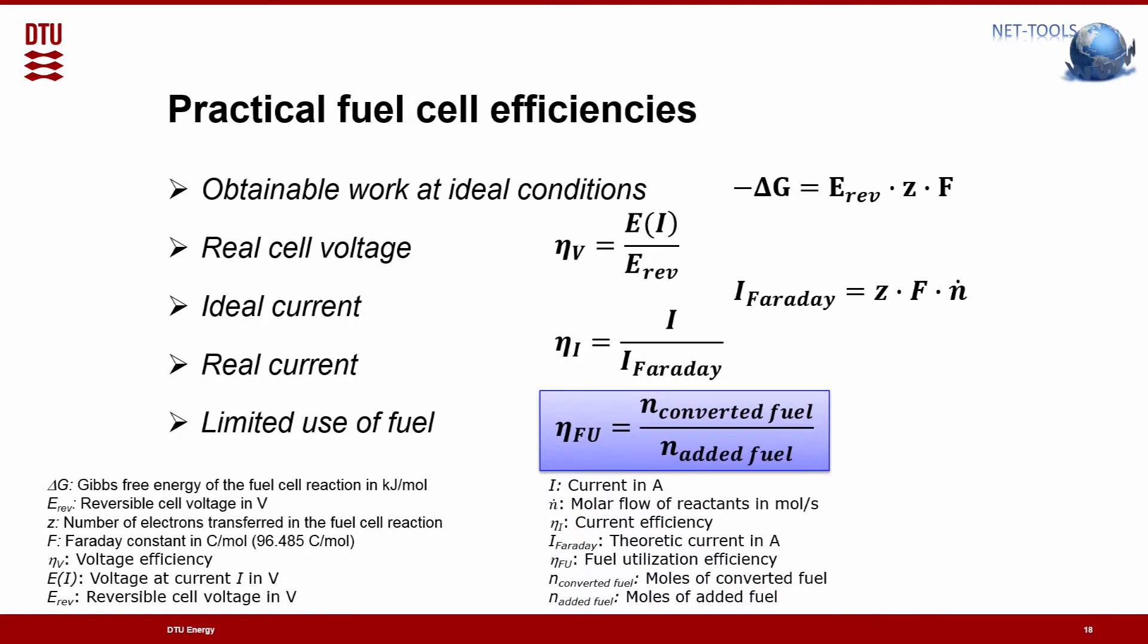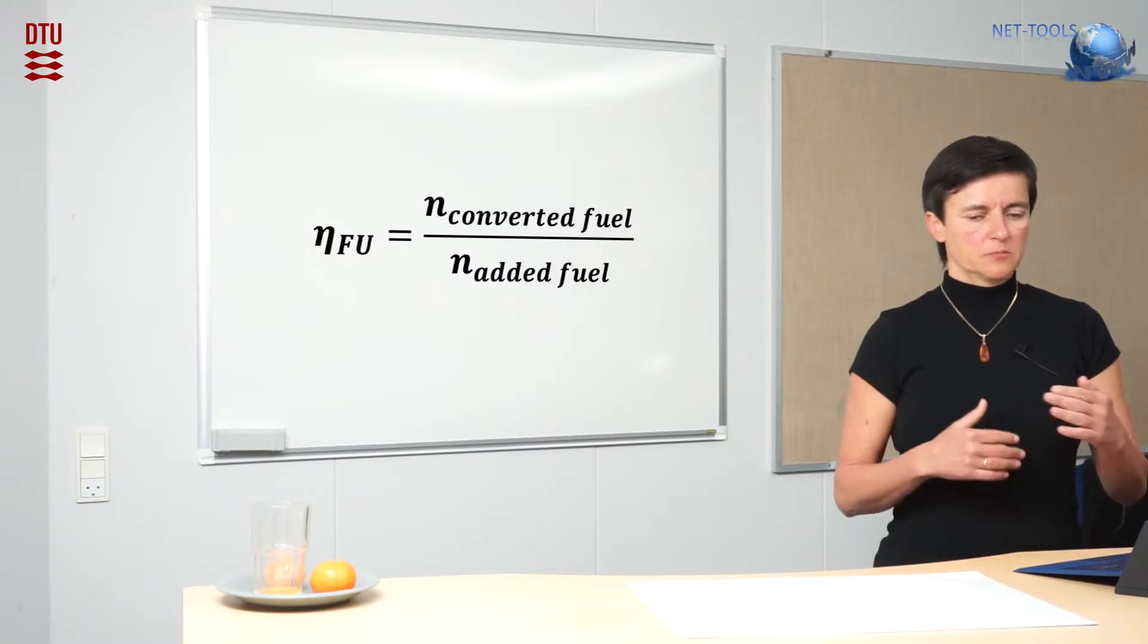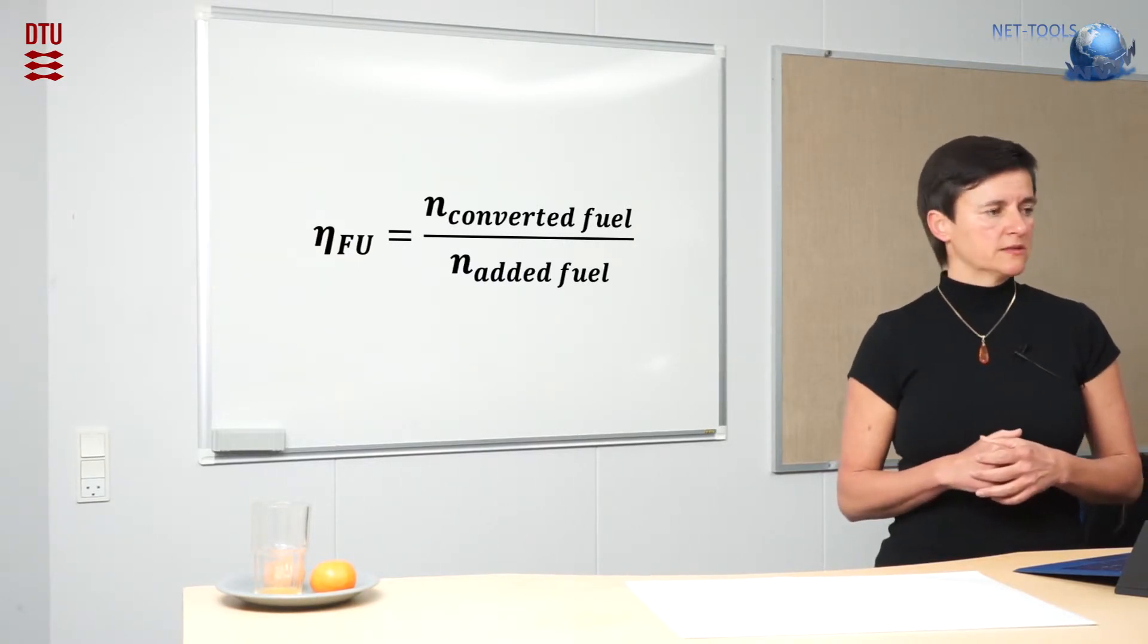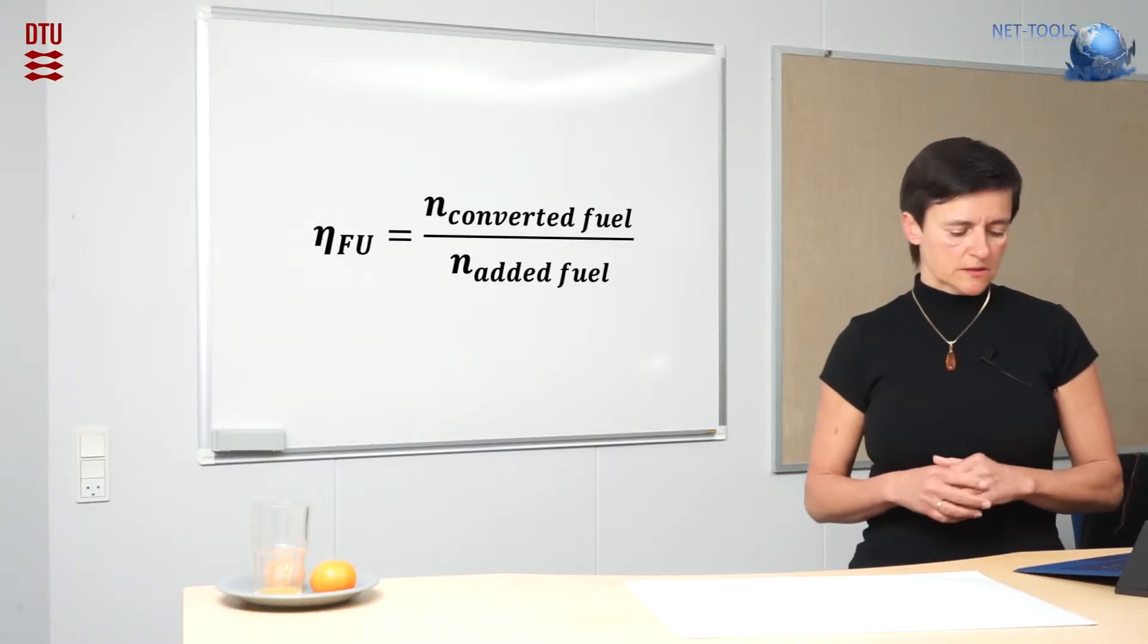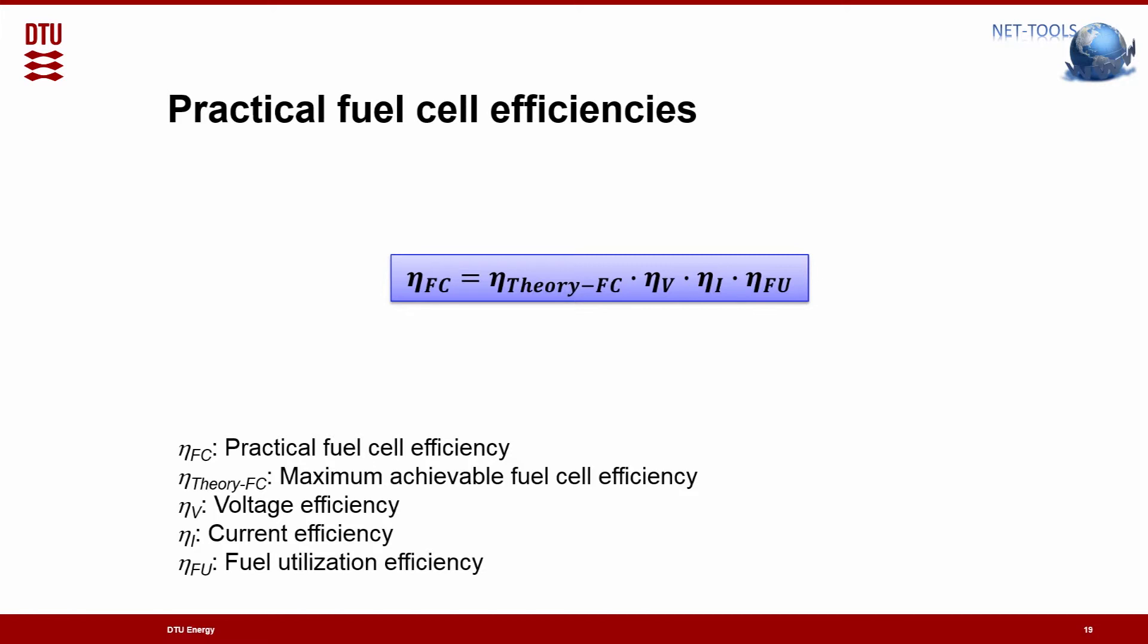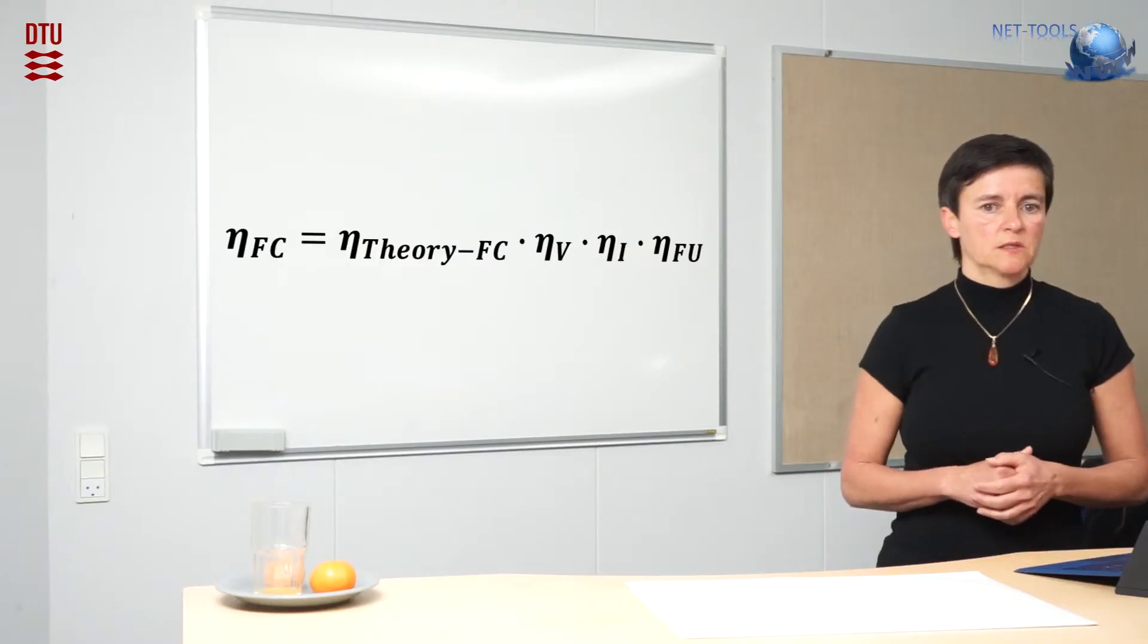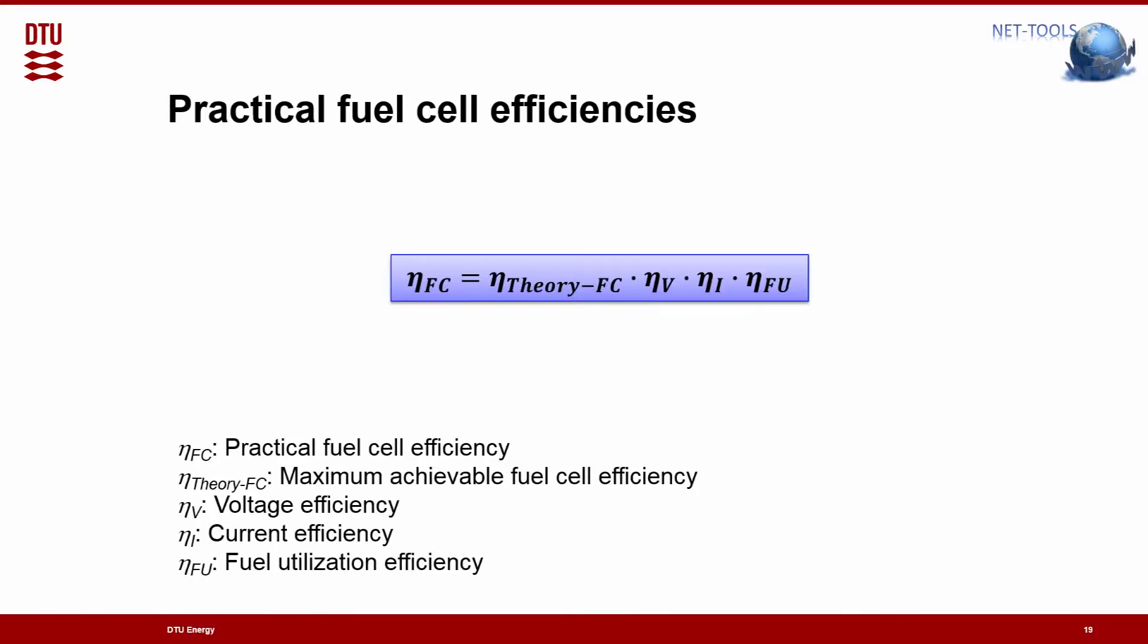And finally, you will never be able to completely convert the fuel you submit. There will always be, or has to be, a remaining part of fuel in the outlet of the fuel cell. So this can be expressed by the fuel utilization. You only use a part of the fuel, up to 95 to 98% typically. So here you see three terms: efficiencies, and they will be added. So in reality, the fuel cell efficiency is the theoretic efficiency times these voltage, current, and fuel utilization efficiencies.